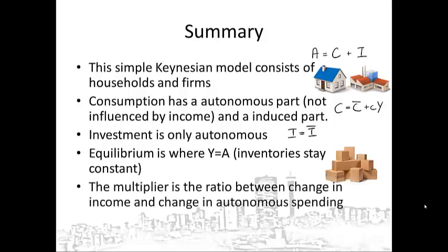The multiplier is the ratio between the change in income and the change in autonomous spending. We know that the eventual impact of investment is much larger than the size of the initial investment in the acquisition of capital goods.